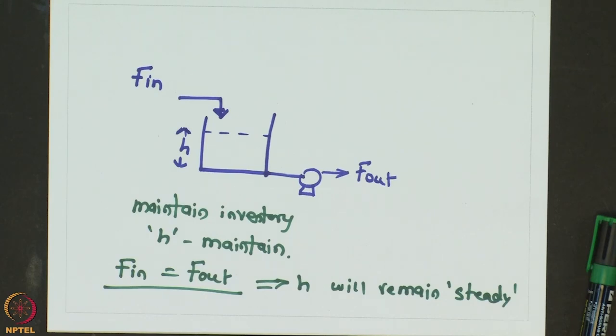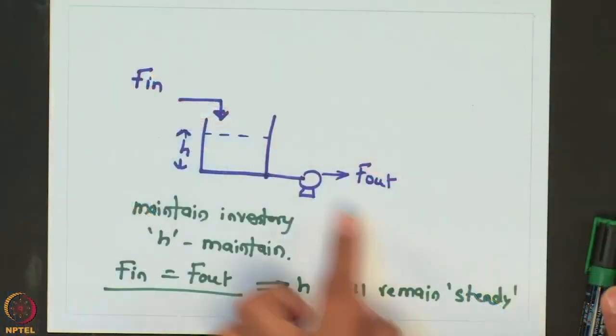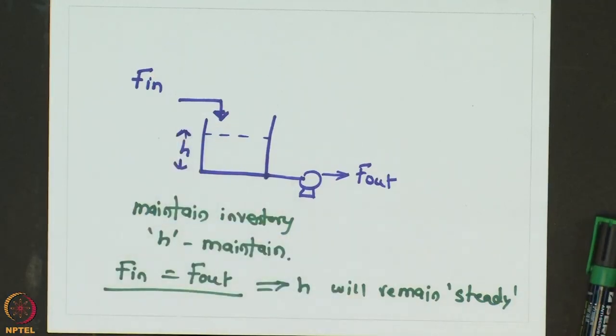If there is some disturbance in F_in and we do not do anything about the outlet flow rate, the tank will either overflow or drain out as a function of time. So, if you want to maintain a particular height in this tank, the control system has to somehow change the outlet flow rate such that it becomes equal to the inlet flow rate, in order to maintain a particular height inside the tank.